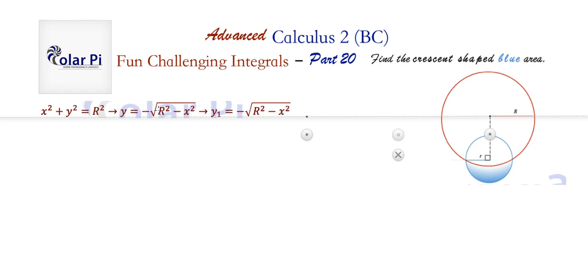I said plus or minus the square root, but you only see the minus here. That's because plus or minus the square root of big R squared minus x squared represents the top half and the bottom half of the circle — the plus part is the top half, and the minus part is the bottom half. I want the minus part because I want the bottom half of the circle, this curve. The bottom half of this maroon or red circle is represented by the equation minus square root of big R squared minus x squared. I've called it y1.